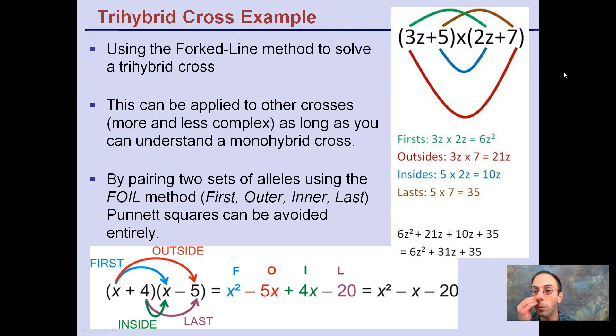So we're going to look at a trihybrid cross using the fork line method. This same method can be applied to more or less complex equations. The key part is you need to understand what a monohybrid cross is and also the FOIL method from math class. We get the first, outer, inner, and last to distribute things and not use a Punnett square.